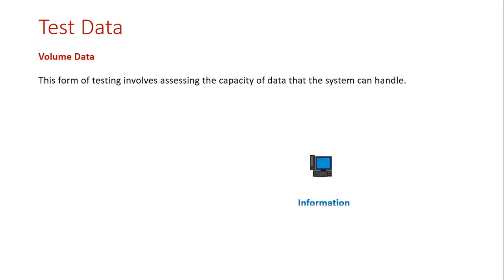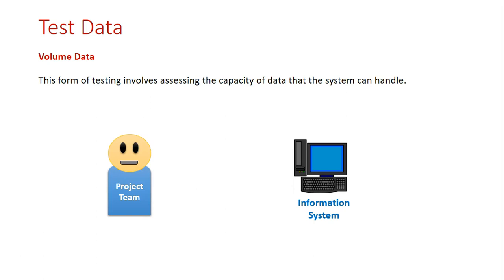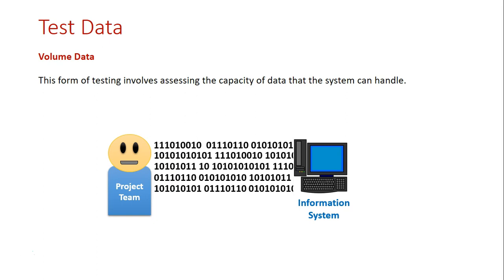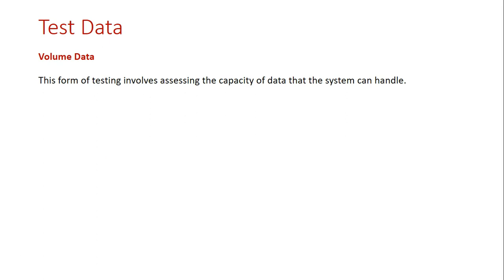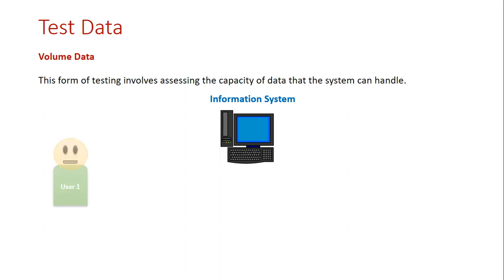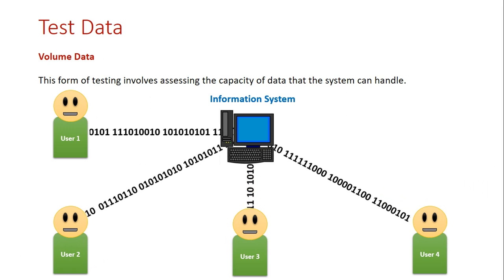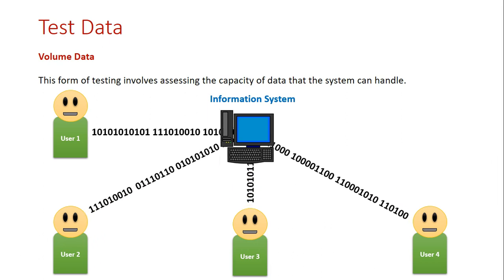We can look at volume data from a few different angles. The first is simply pumping the system with data — the project team on their own entering lots and lots of data and seeing how the system responds: does it slow down, does it crash, can it process the data in a timely manner? The other aspect is having multiple users accessing the system at the same time — checking the online parts of the system when it's live, with all users entering their data from multiple different devices and locations, with different types of data all being entered at once, and seeing how well the system copes with the volume of data.